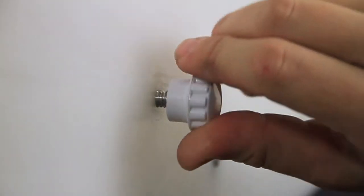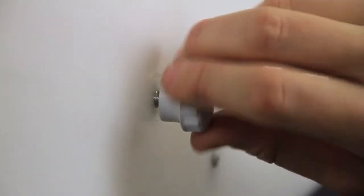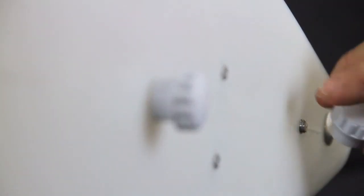Finally, refasten the knobs until they are holding the sign firmly to the bracket. Your bullet sign is now finished. Thank you.